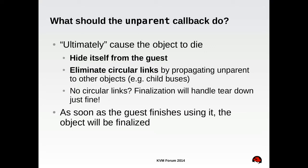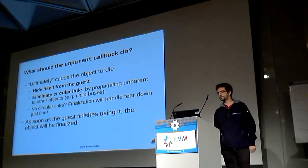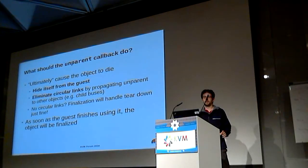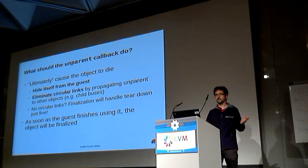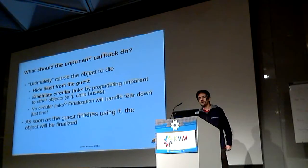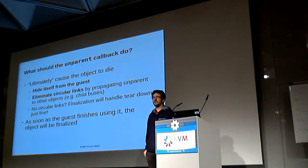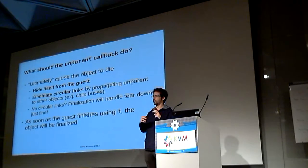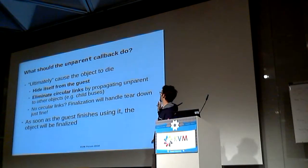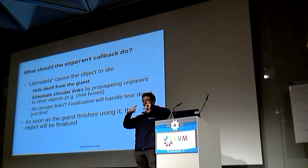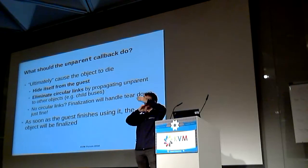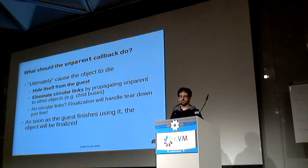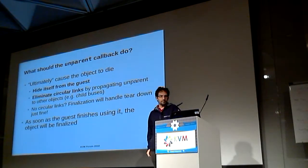What should the unparent callback do for all these mechanisms to work correctly? It should cause the object to die and disappear — hide itself from the guest so the guest can no longer access it. No dangling pointers. And if there are circular links, that's perfectly fine, because as long as the object is in the composition tree, we have an opportunity to drop those circular links in the unparent callbacks. We have circular links between the bus and the parent, and between the bus and the devices on the bus — unparent tears down all of that. If you don't have circular links, most likely you don't have to do anything, and just let everything be handled by finalization.